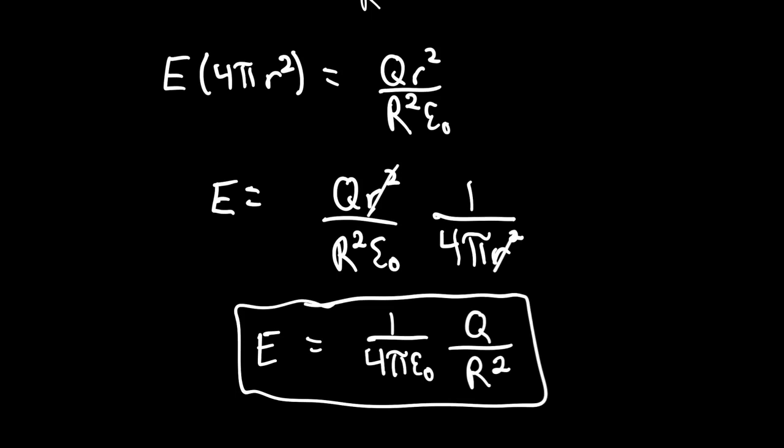E equals 1 over 4π epsilon naught times Q divided by r squared — that's the electric field due to a point charge, KQ over r squared. We just proved that equation using Gauss's law. That's incredible.